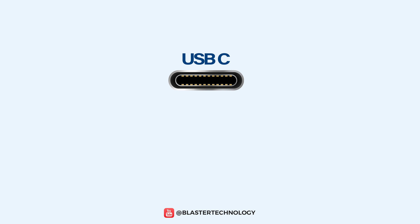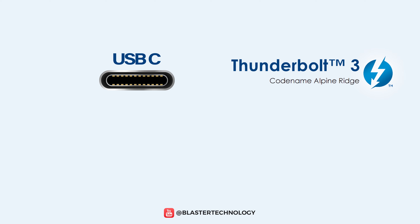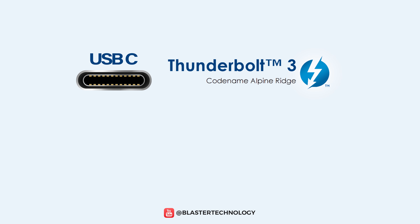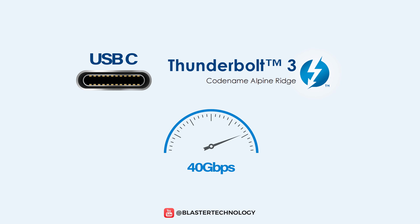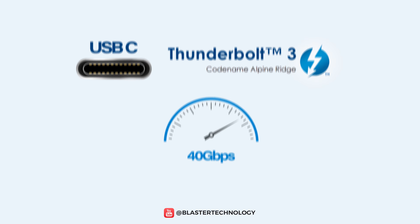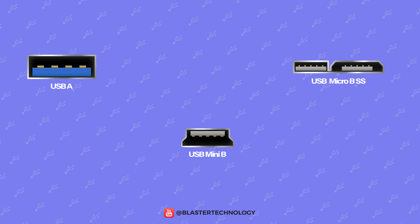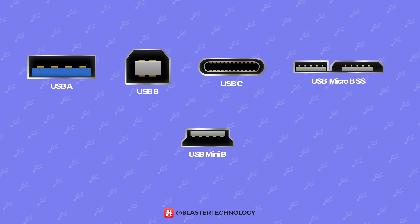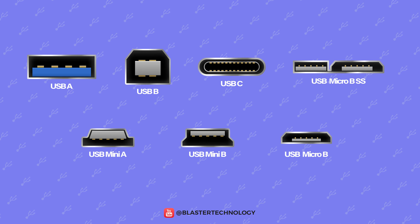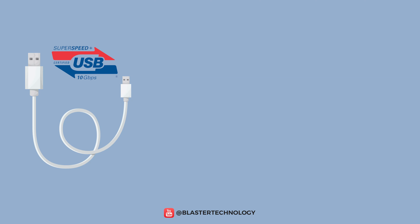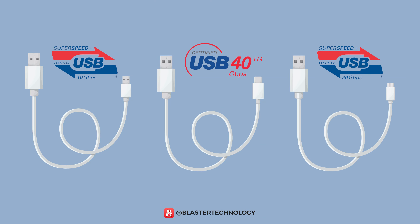USB-C can be used in conjunction with Thunderbolt 3 technology, which allows Thunderbolt and USB-C to combine for 40 gigabits per second bandwidth. In addition to the types of USB connectors, each USB cable and port has a speed standard.